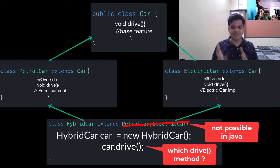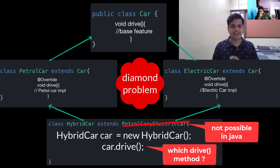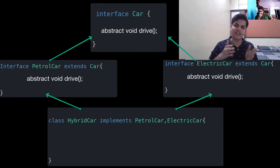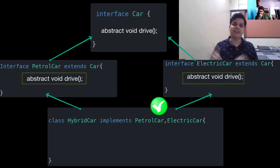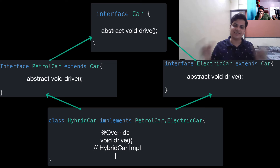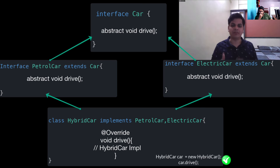But in interfaces, we can only have default methods or abstract methods. Even if two interfaces have the same method signature and we implement both in a single class, since they are abstract methods, we can override them in the implementing class and define a body — so there is no ambiguity problem.